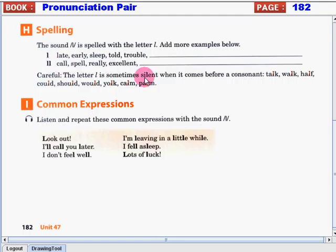But guys, be careful. The letter L is sometimes silent when it comes before a consonant. Let's take a look at the following words: Talk, Walk, Half, Could, Should, Would, Yolk, Calm, Palm. Again, your homework for today is try to come up with your own words that you think have L sound. It could be single L, double L, or silent L in the word. You can always check your dictionary, consult the internet, and ask your friends and family members and even your English teacher to help you.